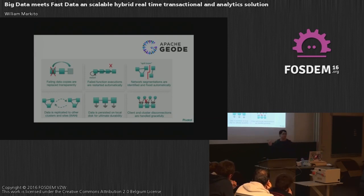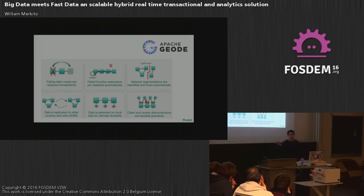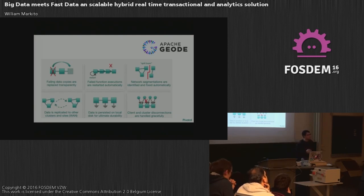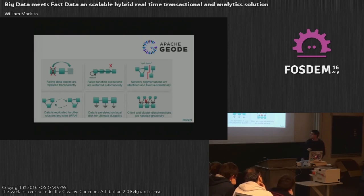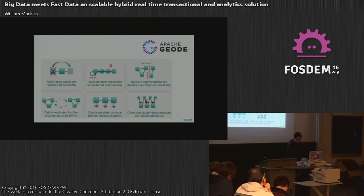Geode deals with network partition and split-brain scenarios — it has built-in support, just enable a flag for network partition detection. It also supports WAN replication, which is great because customers running in one data center can have DR capabilities in another data center, or operate both data centers simultaneously. And since it's in memory, people sometimes worry about losing data if a node crashes, but you can also specify persistence, and we have smart algorithms to recover data from disk even if your entire cluster is down.